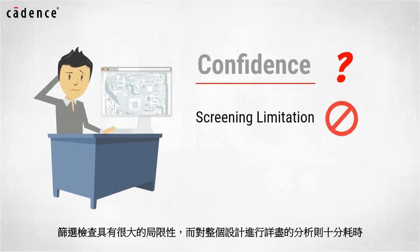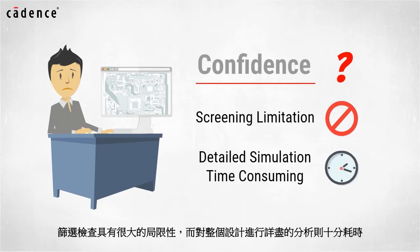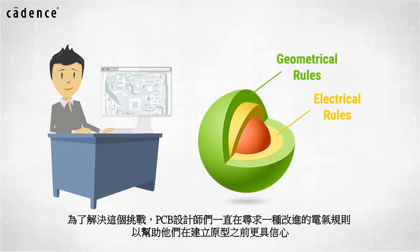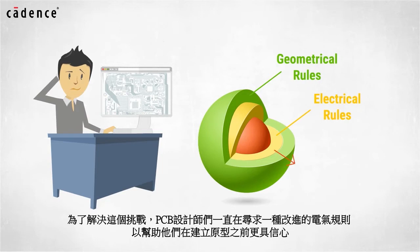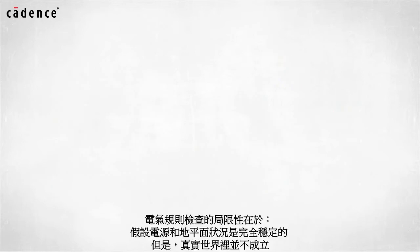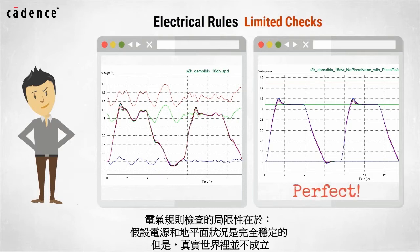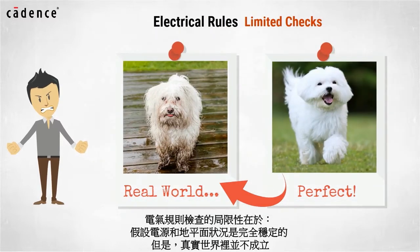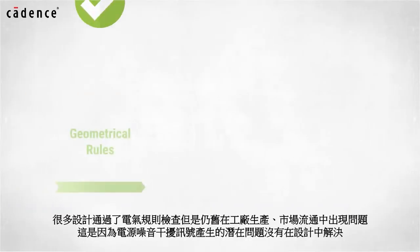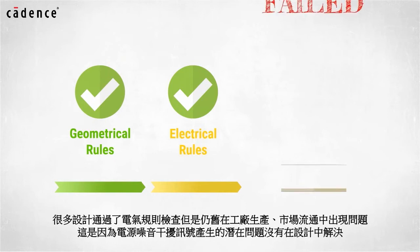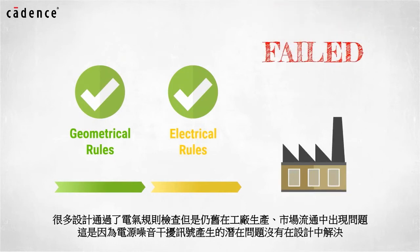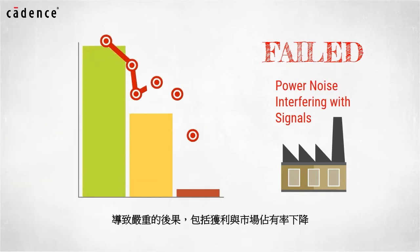Screening has its limitations, and to perform detailed simulation on a full design is likely too time-consuming. To address this challenge, designers have been seeking improved electrical rules so they can continue to have high confidence before building prototypes. Electrical rules have been limited to checks that assume that power and ground rails are perfectly stable, but this is not true in the real world. A number of designs have passed these electrical rule checks but still failed either in the factory or in the field because of the hidden problems caused by power noise interfering with signals, causing loss of revenue and market share.